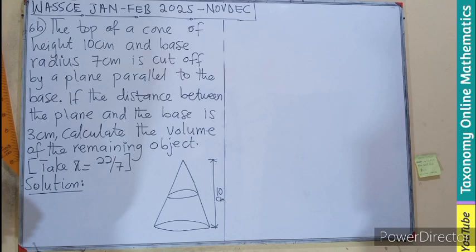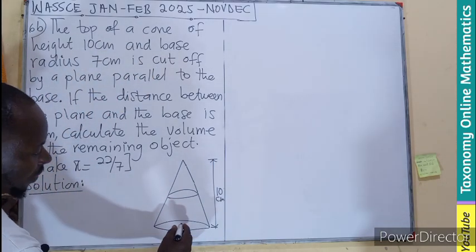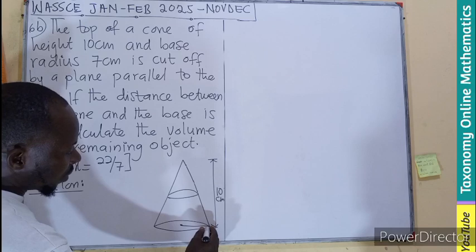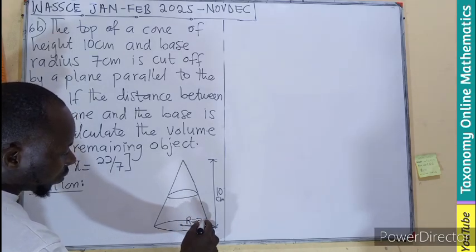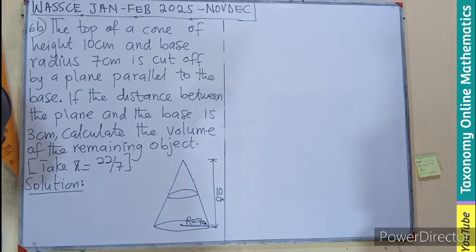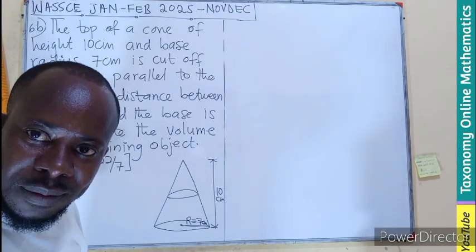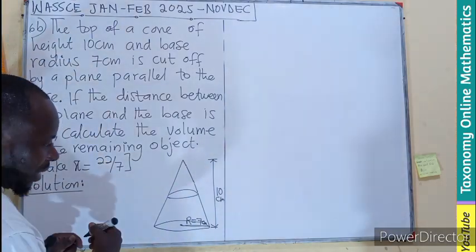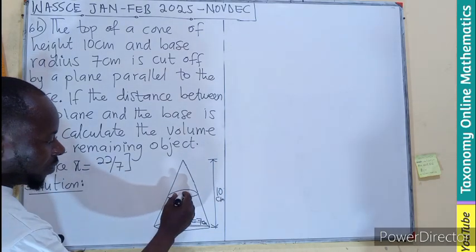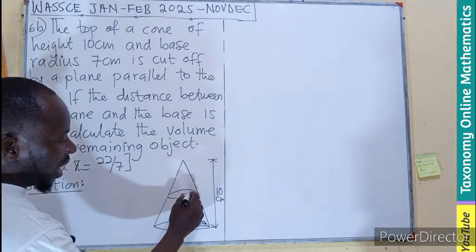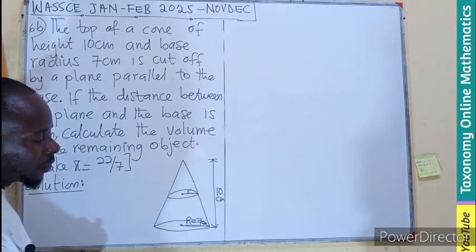Let's just put cm here. Then we also have the base radius. The base radius is given to us as 7. So if this is capital R equals to 7 cm, I guess you can see. Then, the moment we cut this one off, this also is forming a circle. So this will also have to have a radius, small r.